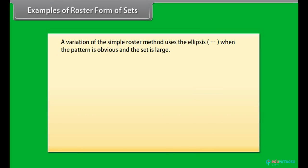Examples of roster form of sets. A variation of the simple roster method uses the ellipsis when the pattern is obvious and the set is large. The set of odd counting numbers less than or equal to 9007 is 1, 3, 5, 7 up to 9007.